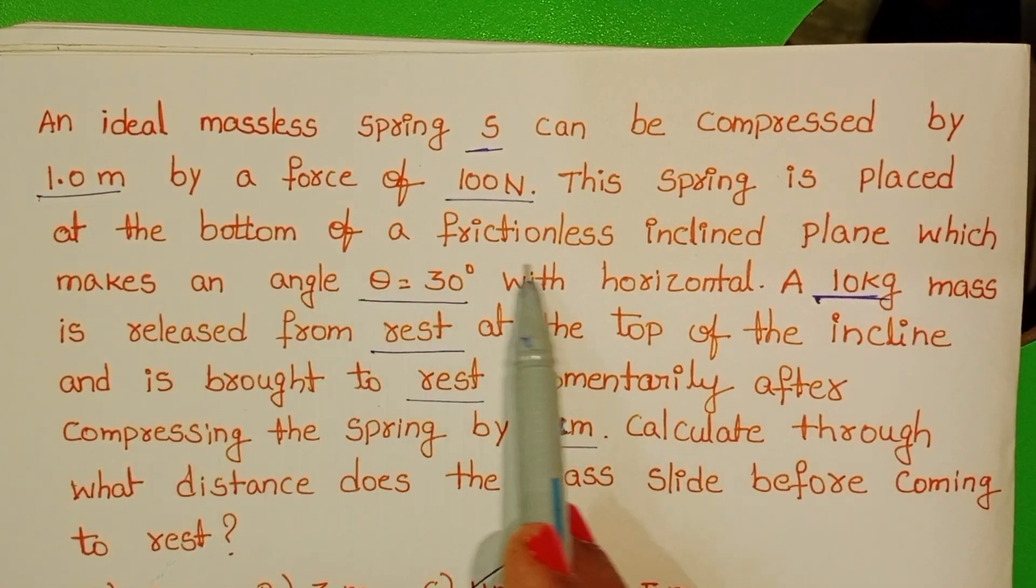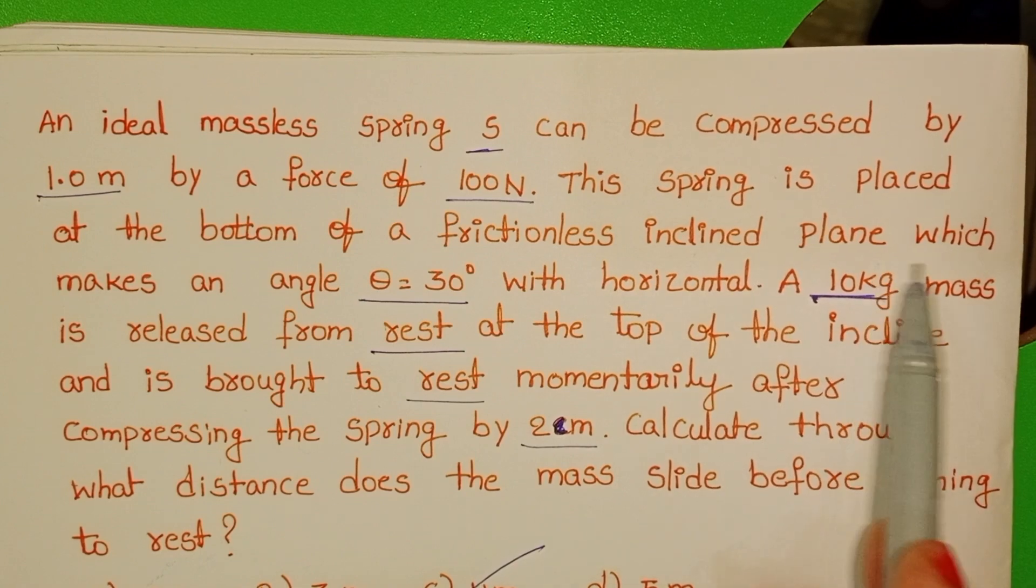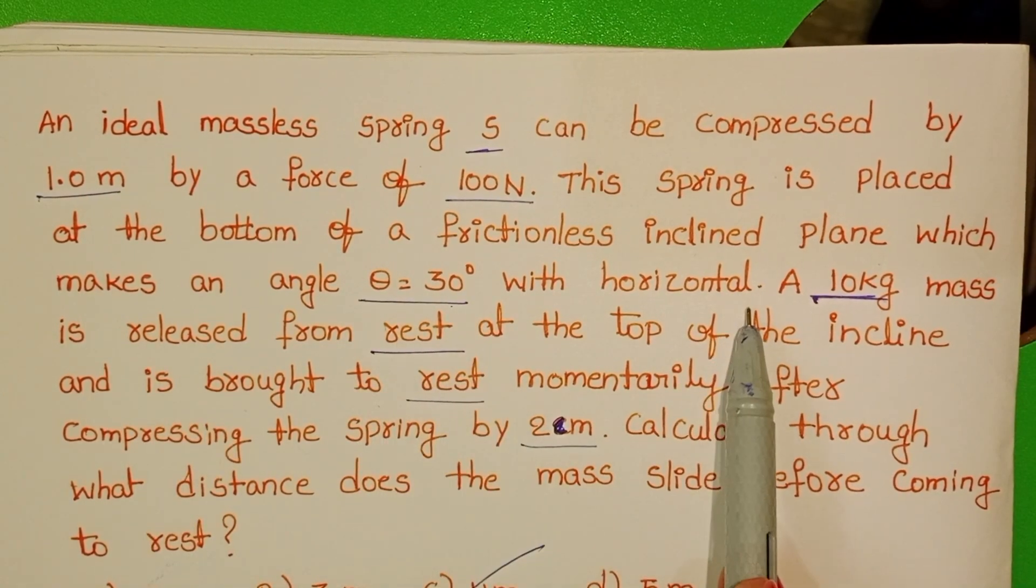The spring is placed at the bottom of a frictionless inclined plane which makes an angle θ = 30° with the horizontal.